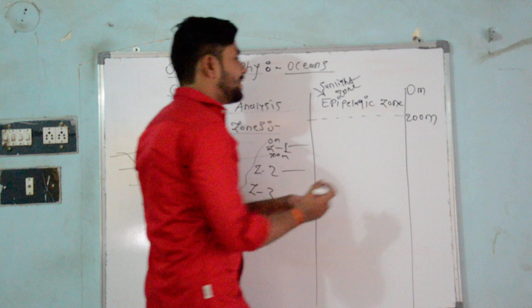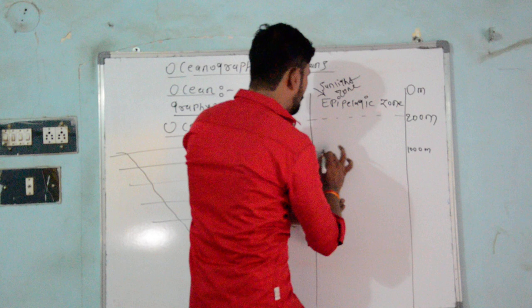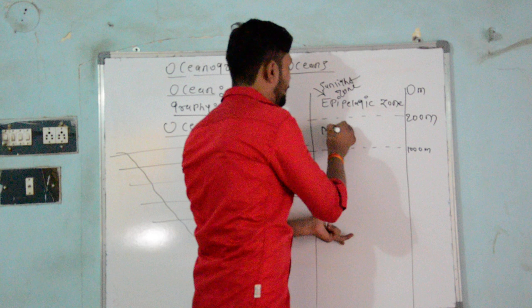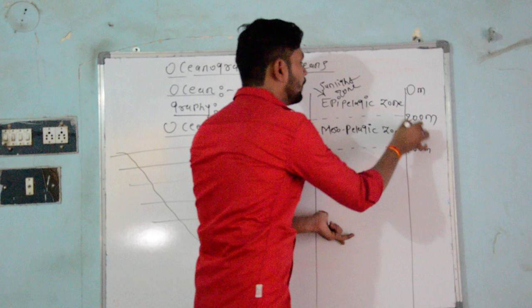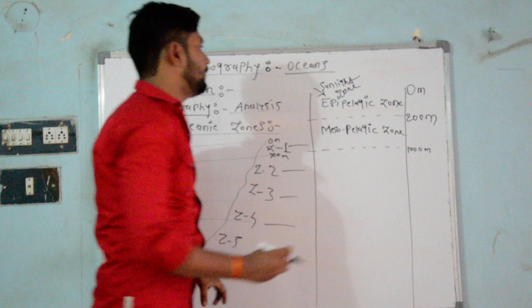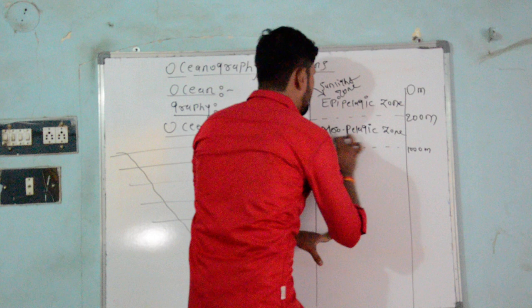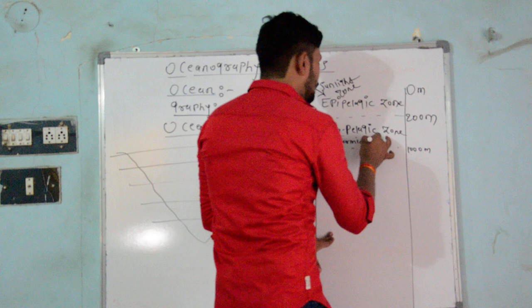After that, in between 200 to 1,000 meter, there is a mesopelagic zone. The meaning of mesopelagic zone means the intermediate.